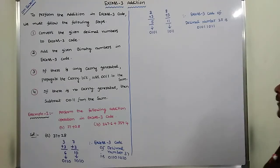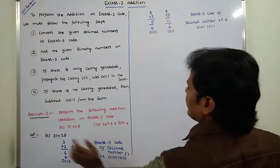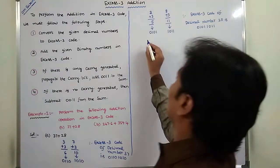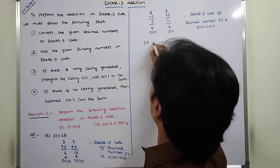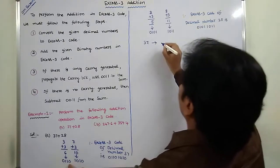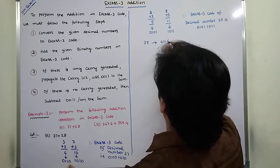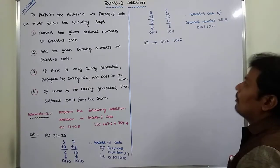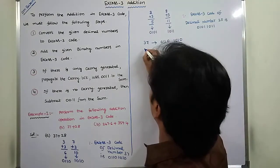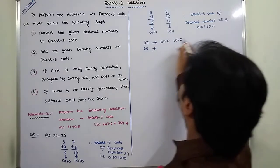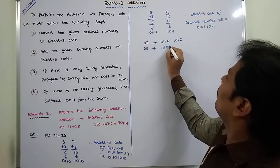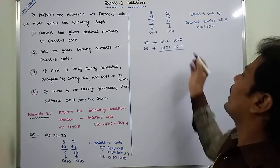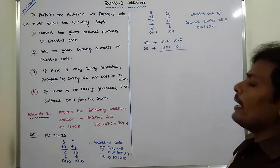After getting the XS3 code of 37 and XS3 code of 28, we have to perform the addition operation. XS3 code of 37 is 0110 1010. XS3 code of 28 is 0101 1011. Now we have to add these using binary addition.